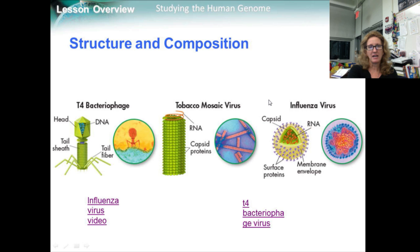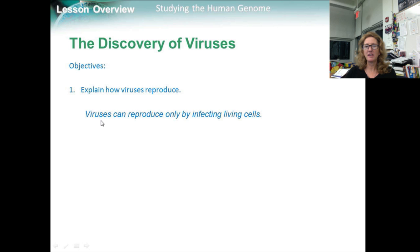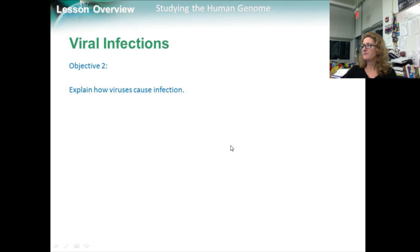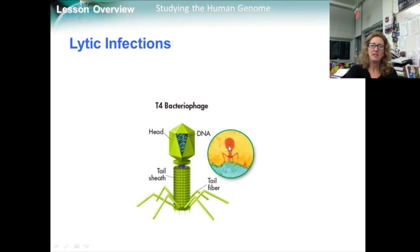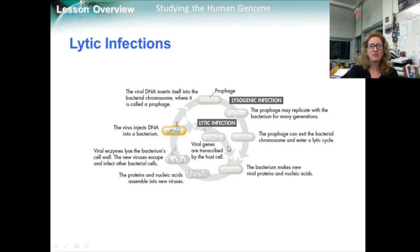How do viruses reproduce? They reproduce by infecting living cells. In a lytic infection, a virus enters a bacterial cell, makes copies of those cells, and causes the cell to burst or to lyse. Bacterial T4 is an example of a bacteriophage that causes such an infection.